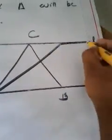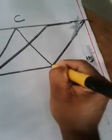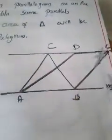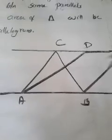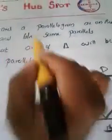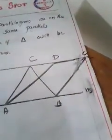Let me draw the figure. Consider two parallel lines L and M. Draw triangle ABC with base AB, and parallelogram ABCD with base AB. Triangle ABC and parallelogram ABCD are on the same base AB. Both the triangle and the parallelogram lie between the same parallel lines.